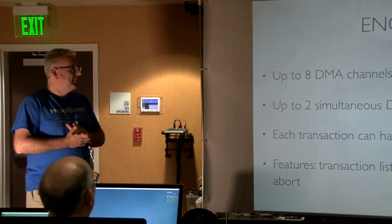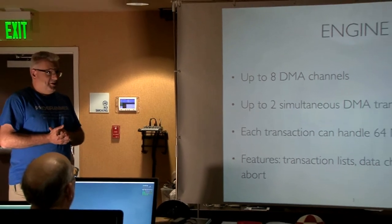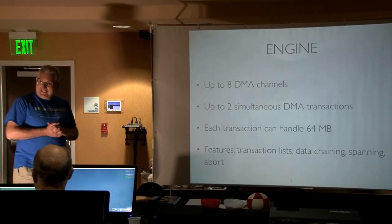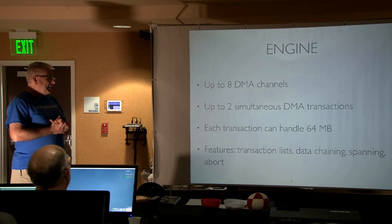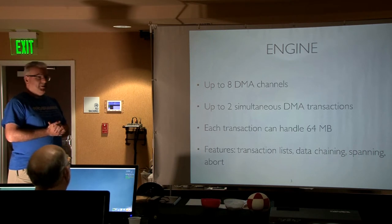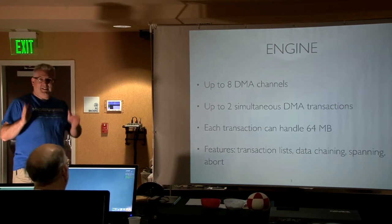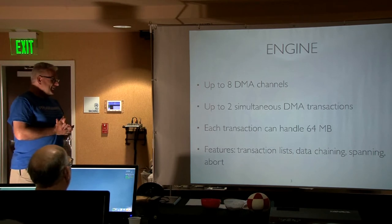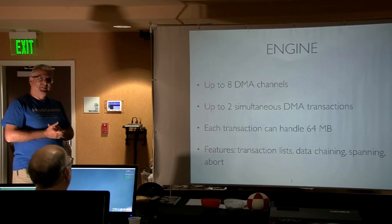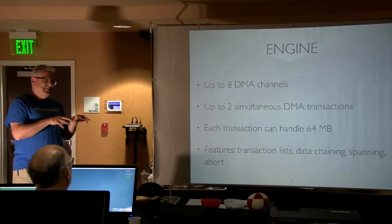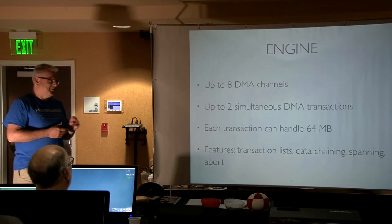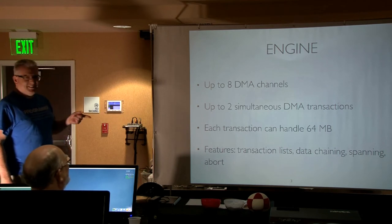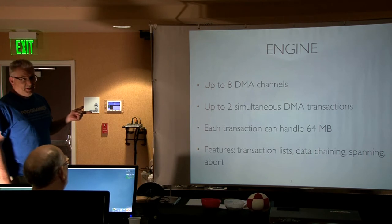So this DMA engine is pretty cool. It has eight channels - remember DMA channels from the old days? That's why it's speedy. On this one you can do up to two transfers at the same time. I haven't seen a DMA engine that does dual channels in this setting. Each transaction can have up to 64 megs. Pretty cool - 64 meg chunks.